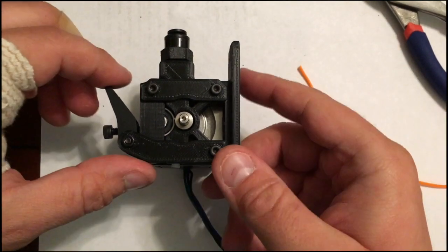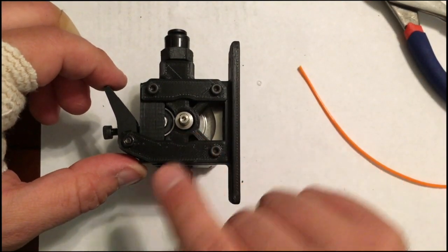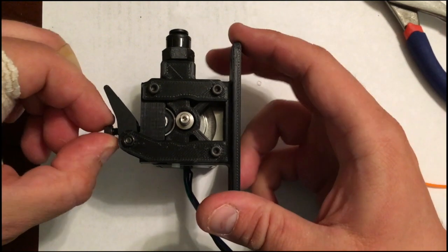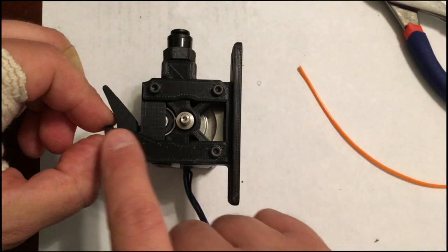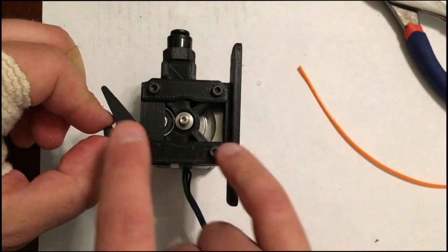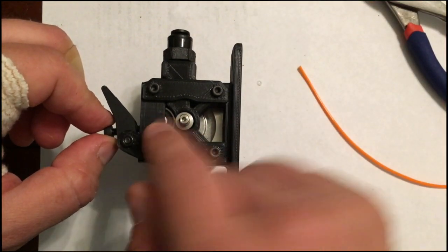Here's the extruder. It doesn't use any springs. The tension arms actually are the springs. Then you adjust the tension by increasing the distance between the two screws, which puts more pressure on the idler bearing.